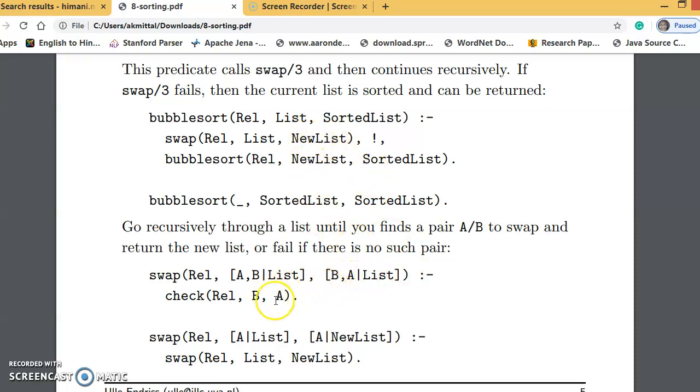If this check doesn't return true and returns false, then we will call the next implementation of the predicate. In this case, the reordering is not required as A and B were in the correct order initially.